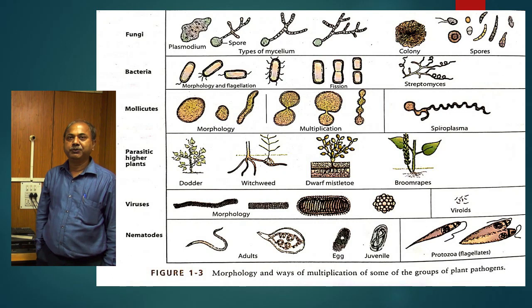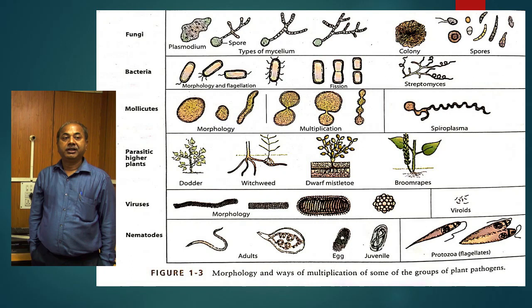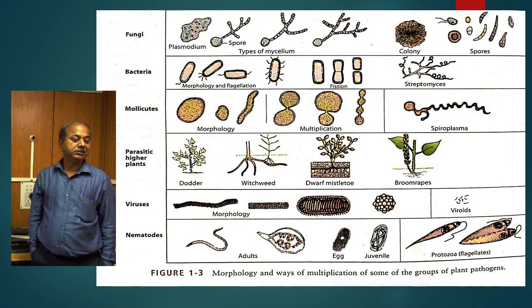The phytopathogenic bacterial genera are Xanthomonas, Pseudomonas, Erwinia, then Clavibacter, then Streptomyces, then Xylella, then Agrobacterium. These are the genera of bacteria which cause diseases in plants.